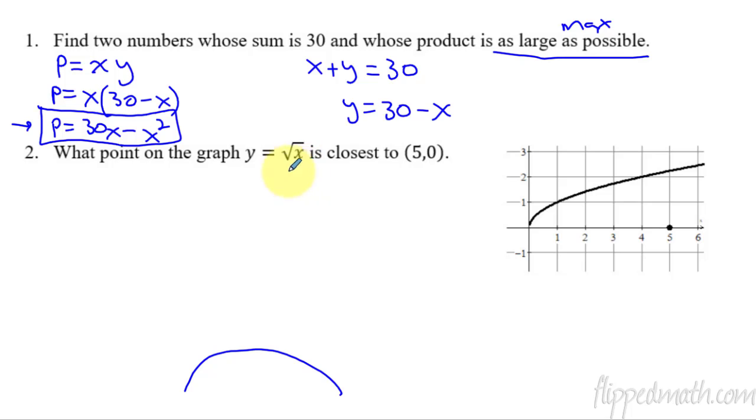Now let's go to the next one. What point on the graph y equals the square root of x is closest to (5,0)? So where on this function, square root of x graph, do we have a point that's really close to 5,0? Obviously, this is far away. It's getting closer. It's somewhere in here. So I'm just going to guess and put a point right here just for the visual. I'm trying to figure out the closest point. Well, that means distance, the distance between these two points. I want it to be small. Closest is basically saying I want the least distance.